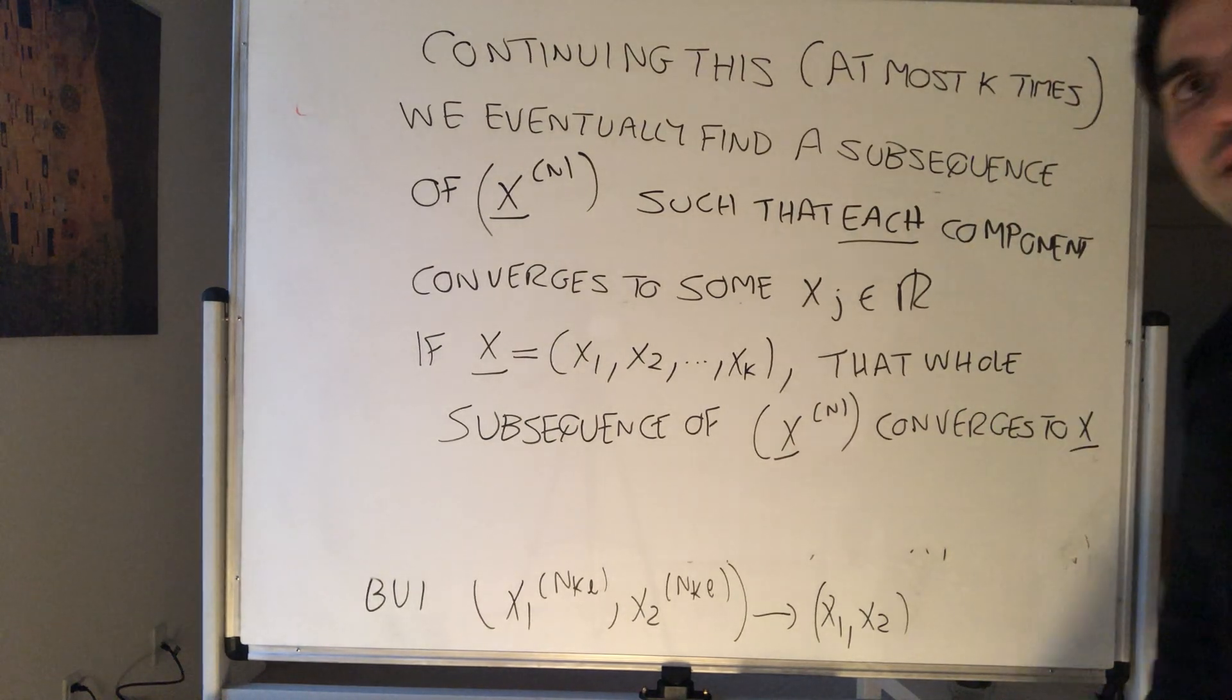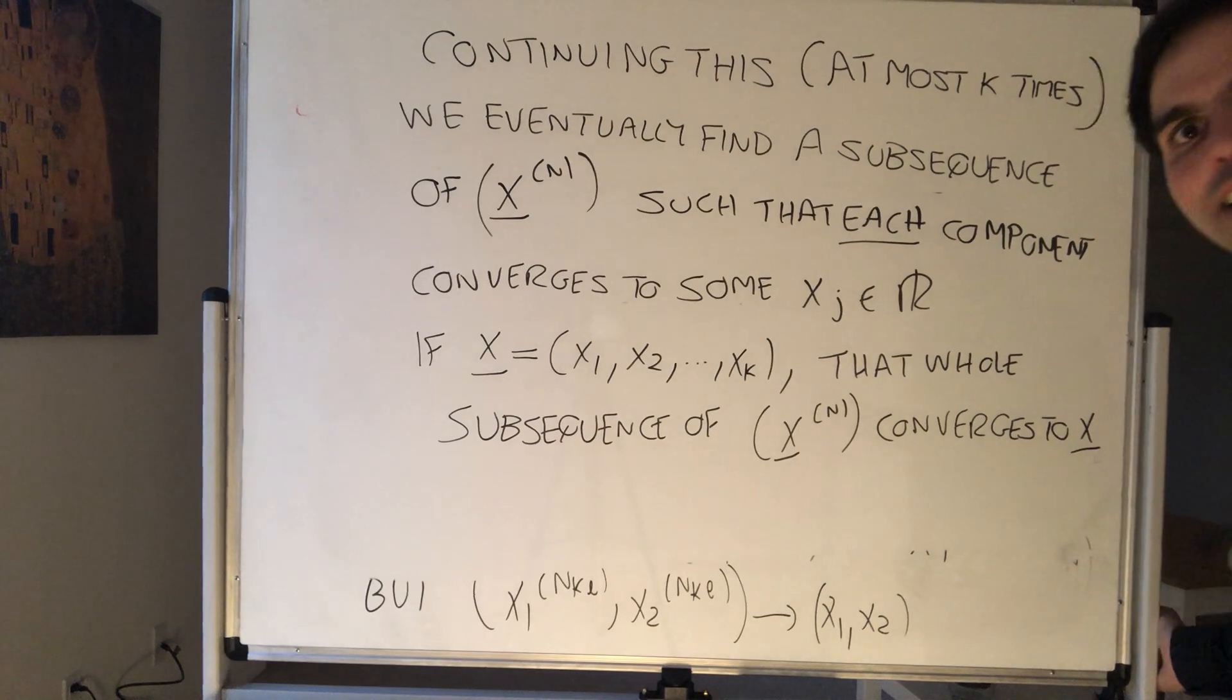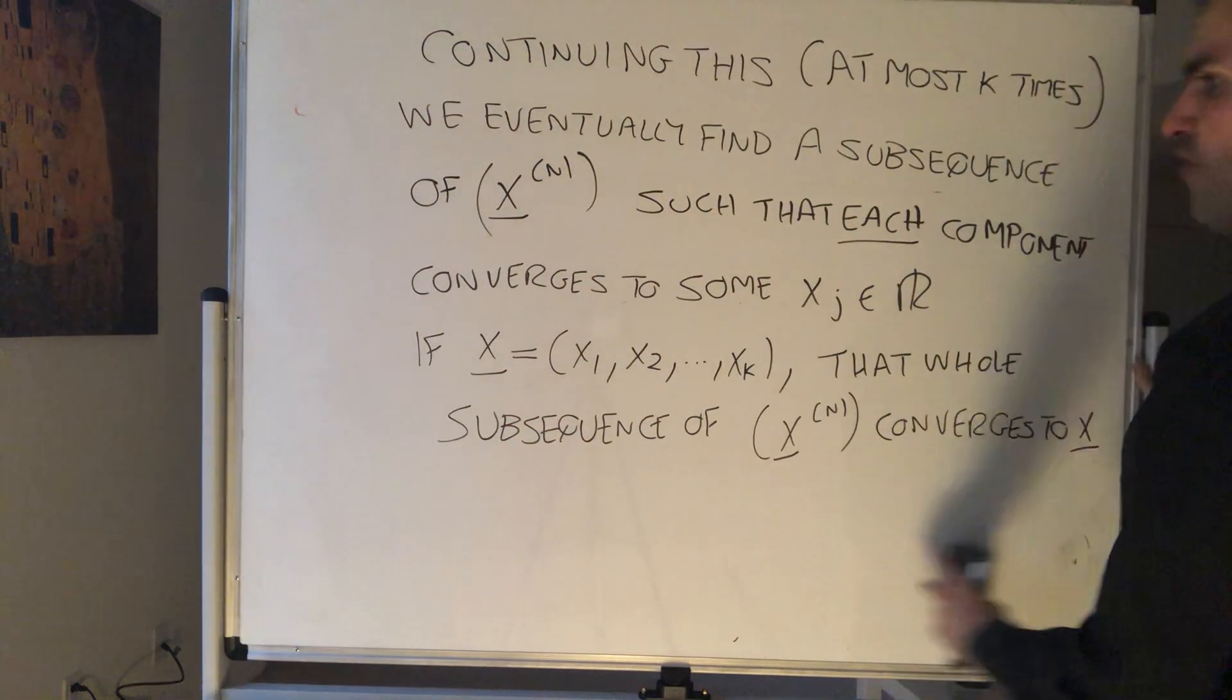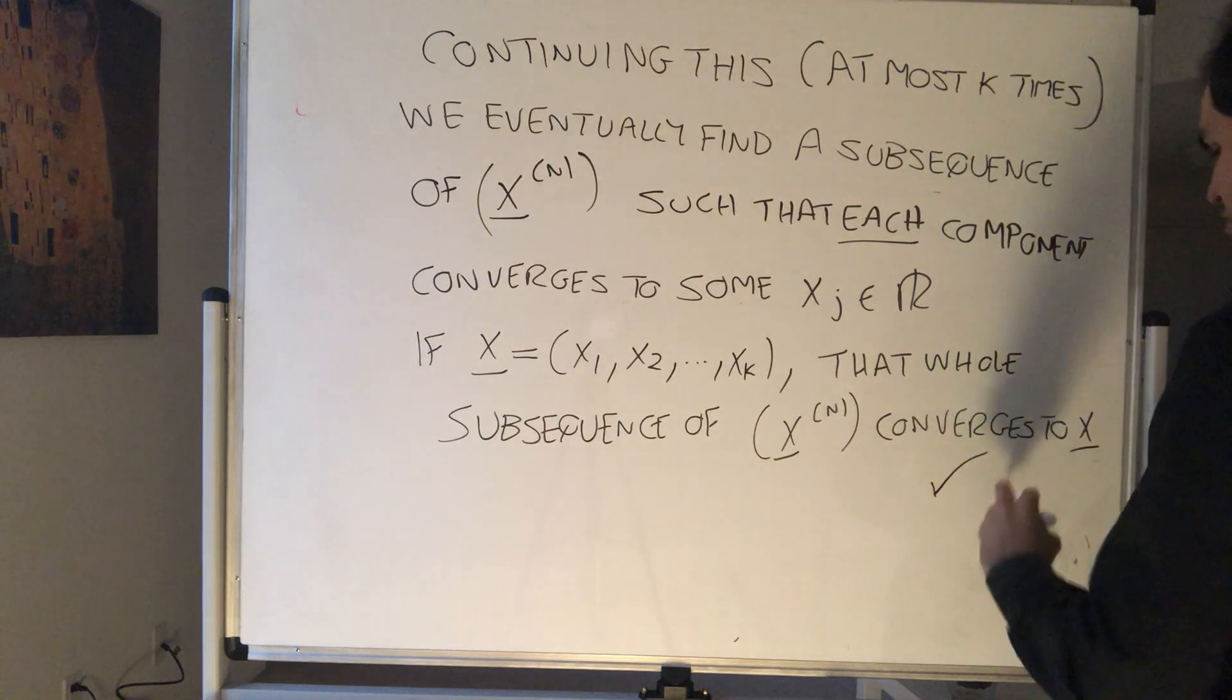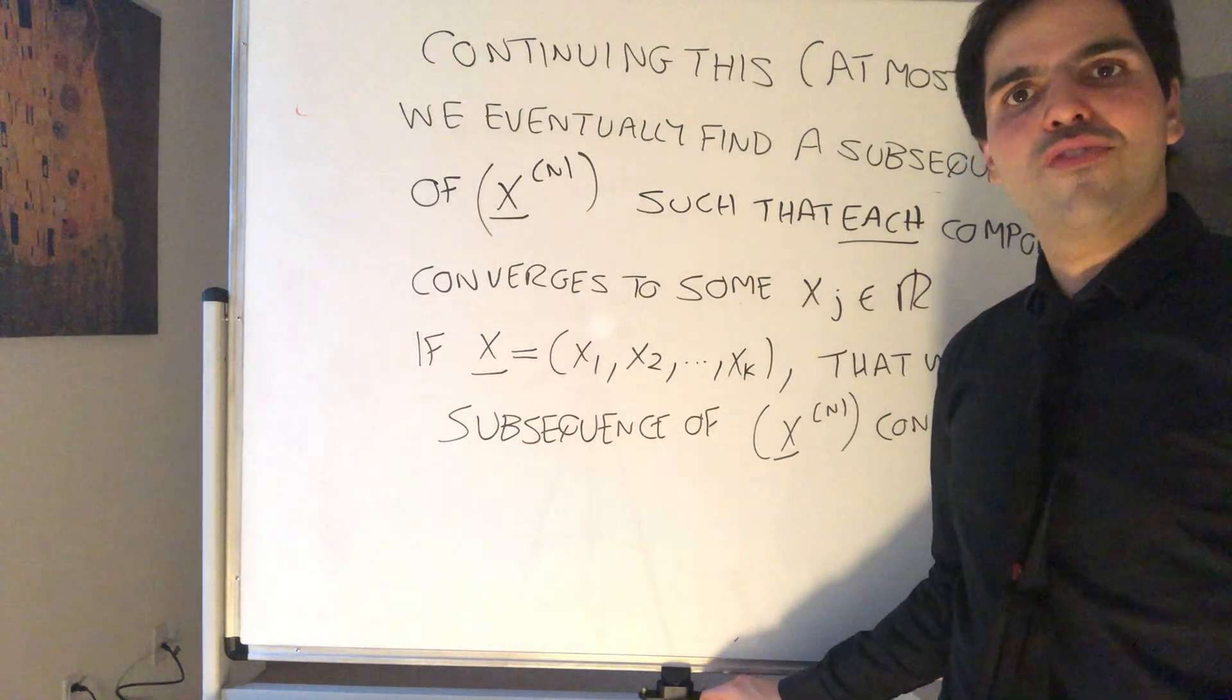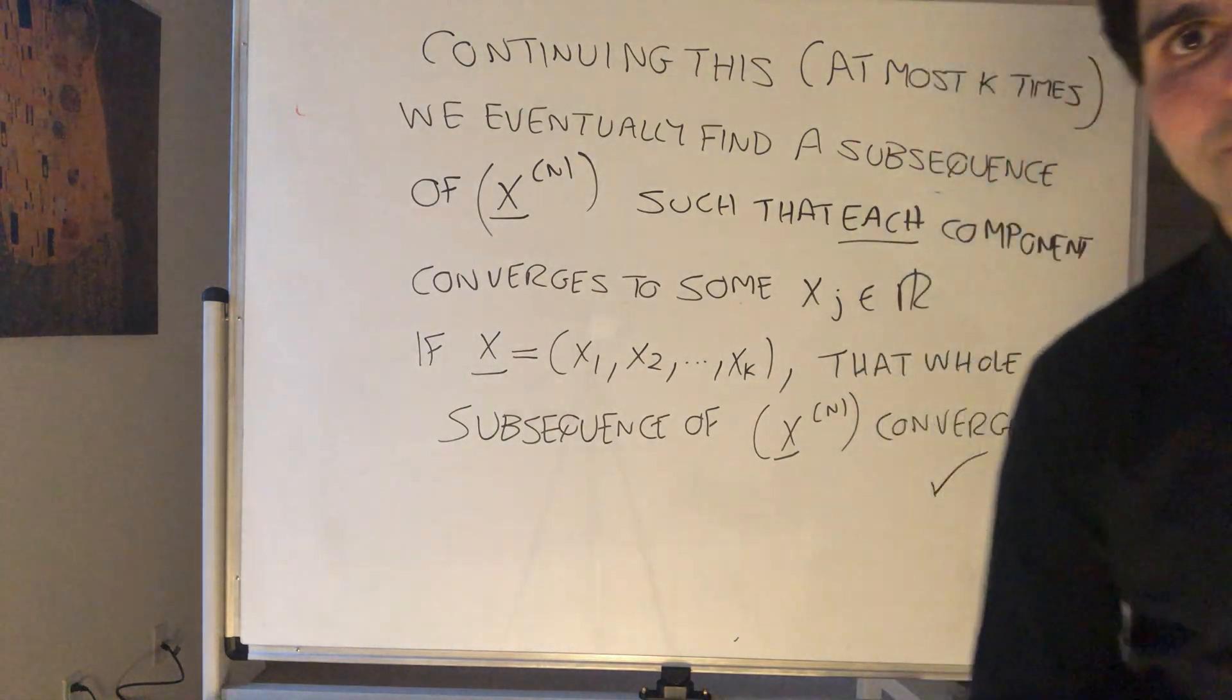And again, if you want to be very technical, you can just do an inductive proof in this sense. We don't even need this because it's just a finite number of times, so we need to repeat the same proof finite number of times, and therefore we are done. We found a subsequence of X_n that actually converges to some number in R^k, and then we're done. Alright, and this is pretty much everything for R^k, but we'll talk more generalities of metric spaces next time. Alright, thank you.